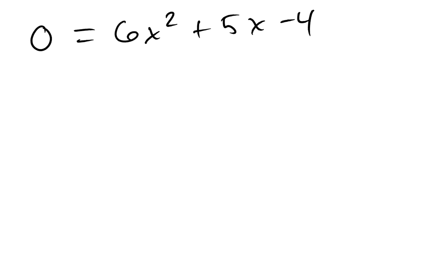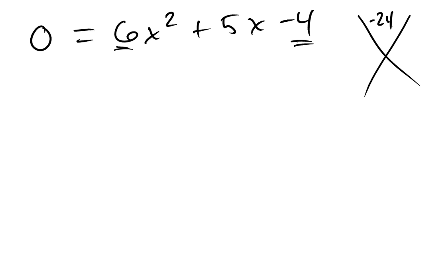If I wanted to factor this expression, I use something I call the AC method of factoring. I look at the product of A and C, and in this problem that product is negative 24, and B is 5.